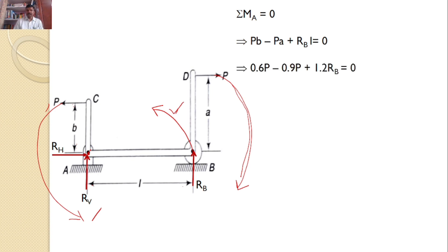Now the respective values are given: b equals 0.6, a equals 0.9, L equals 1.2. Upon substituting, I will get 0.6P minus 0.9P plus 1.2RB equals 0, or 1.2RB equals 0.3P. Hence I can find the reaction at B, RB equals 0.25P.